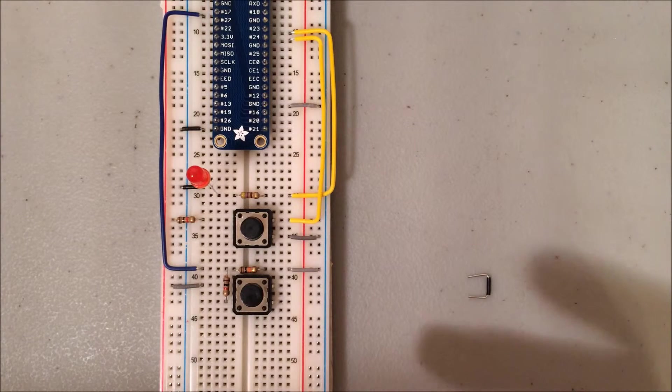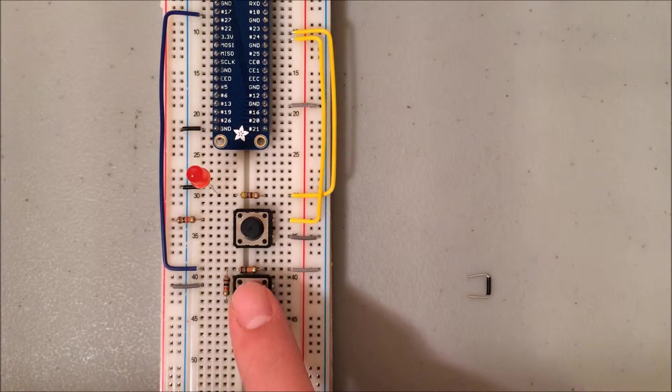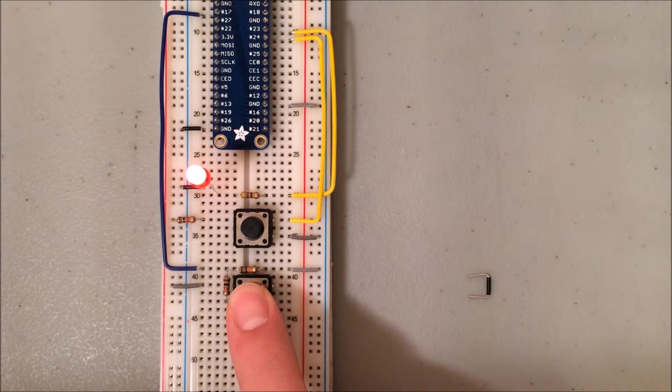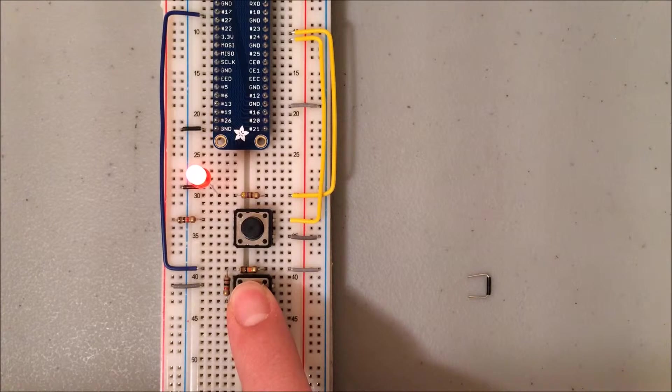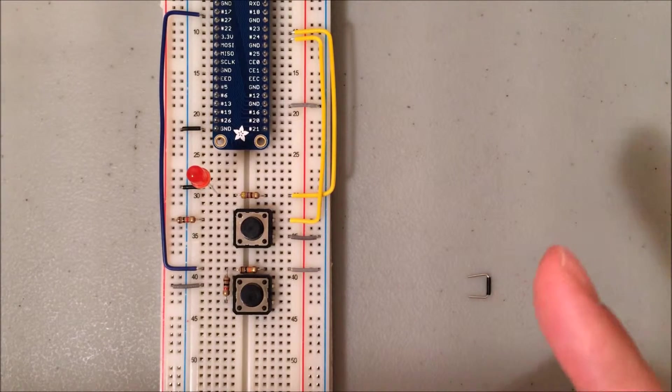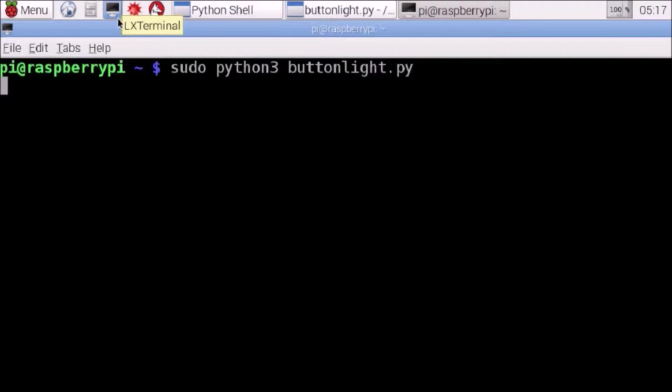As expected, the LED is not on from the start. It should light up when I hold down this button. So here we go. As hoped, it does light up, and when I let go, the light turns out. Looking back to LX Terminal, I need to hit Ctrl-C to do the keyboard interrupt. And that executes our GPIO.cleanup, as we hoped it would.